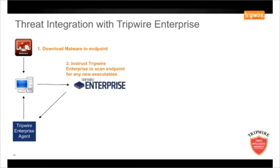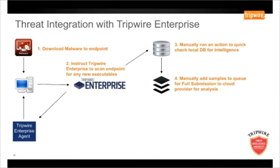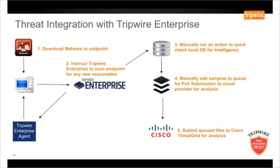We are going to instruct Tripwire to scan the endpoint for any new executables. Once we have detected the new files, we are going to manually run an action to check if the files have been seen before in our local database. We are then going to add the files to a queue that will later be submitted to the threat provider for analysis. This step can be configured to submit the file to the provider in real time, removing the requirement to queue the process. We will then execute a script in Tripwire Enterprise to send the files to Cisco Threat Grid for analysis. Once analysed, we will show the files as a threat within Tripwire Enterprise along with the report information from Cisco.